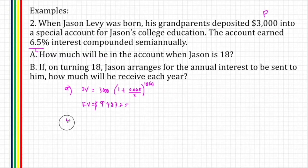For B, if on turning 18, Jason arranges for the annual interest to be sent to him, how much will he receive each year?